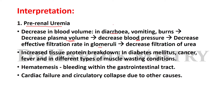Second pre-renal cause: increased tissue protein breakdown, in conditions of diabetes mellitus, cancer, fever, and different types of muscle wasting conditions. Also hematemesis — bleeding within the gastrointestinal tract — cardiac failure, and circulatory collapse due to other causes. These are all causes of pre-renal uremia.